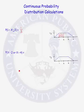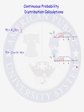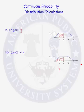The last probability calculation for this distribution is: what is the probability that x is less than 2 or x is greater than 4? The area for x less than 2 was found to be 1/2. The probability that x is greater than 4 is 0, since there is no area to the right of 4. So this probability equals 1/2 plus 0, which equals 1/2.